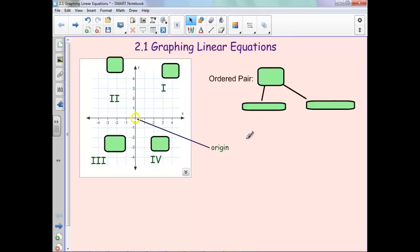When you have an ordered pair, it always goes x, y, where the first is our x-coordinate, the second is our y-coordinate.